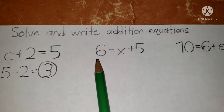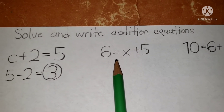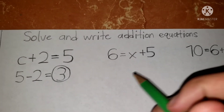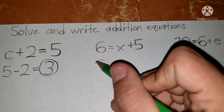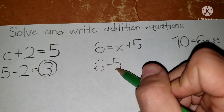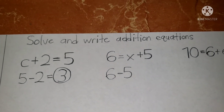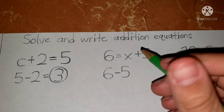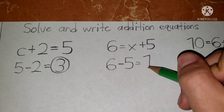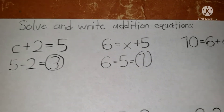Now, six equals x plus five. What do you do here? Well, six and five — you make it negative, so it would be six minus five. What's the answer? Six minus five equals one. Just like that, guys — this is easy.